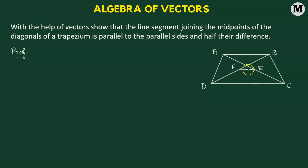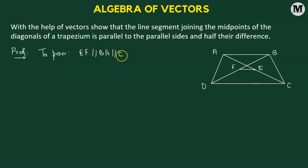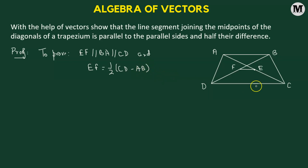When we join E and F, we need to show that EF is parallel to AB as well as DC. Our goal is to prove that the line segment formed by joining the midpoints of the diagonals of the trapezium is parallel to BA and CD, and that EF equals half the difference between CD and AB — assuming CD is larger than BA. We will show this with vectors: EF vector is parallel to BA vector, which is parallel to CD vector, and EF vector equals half of CD vector minus BA vector.